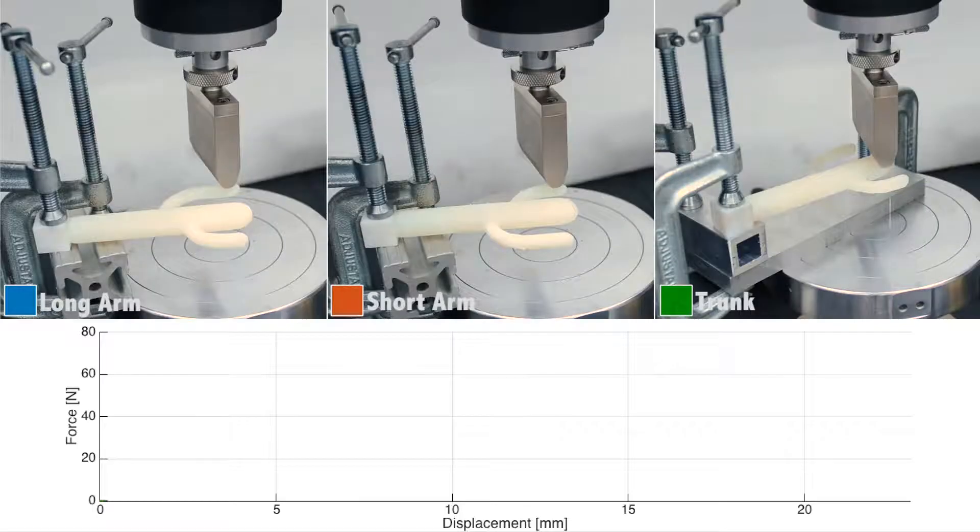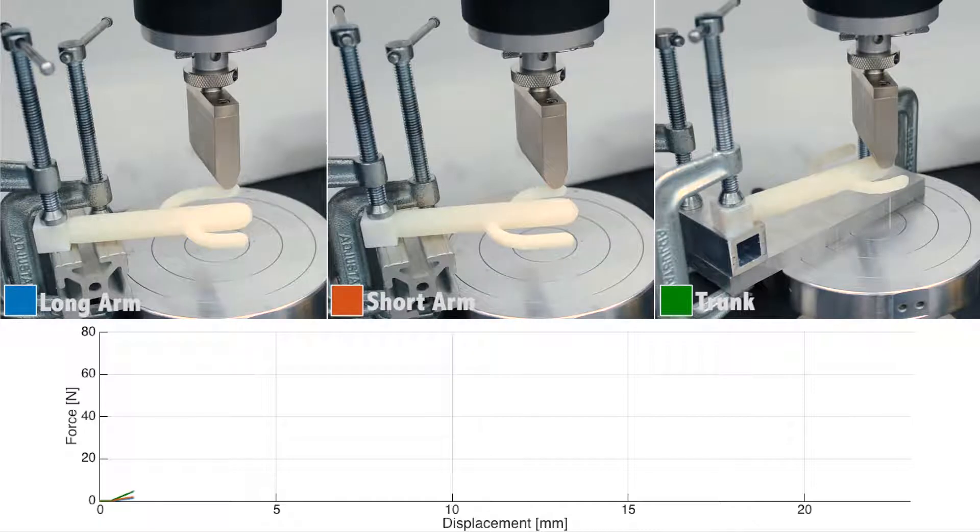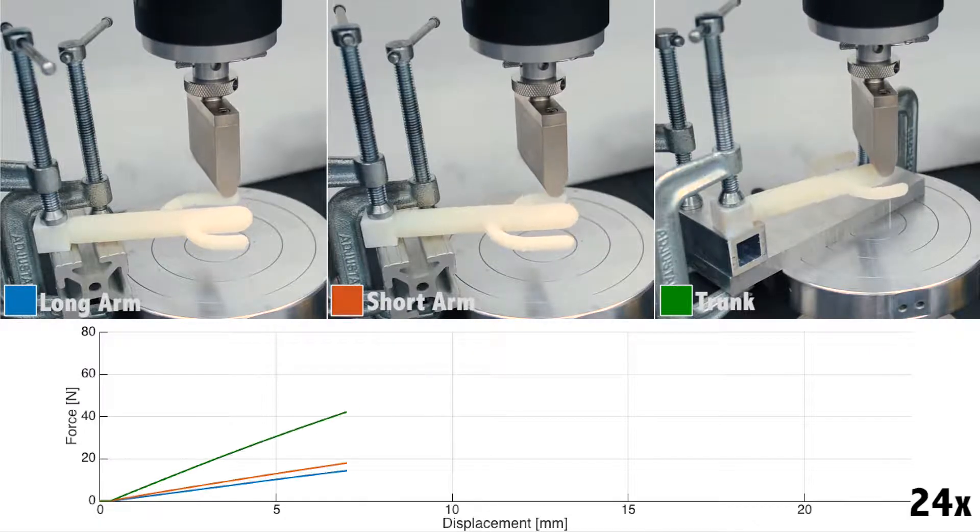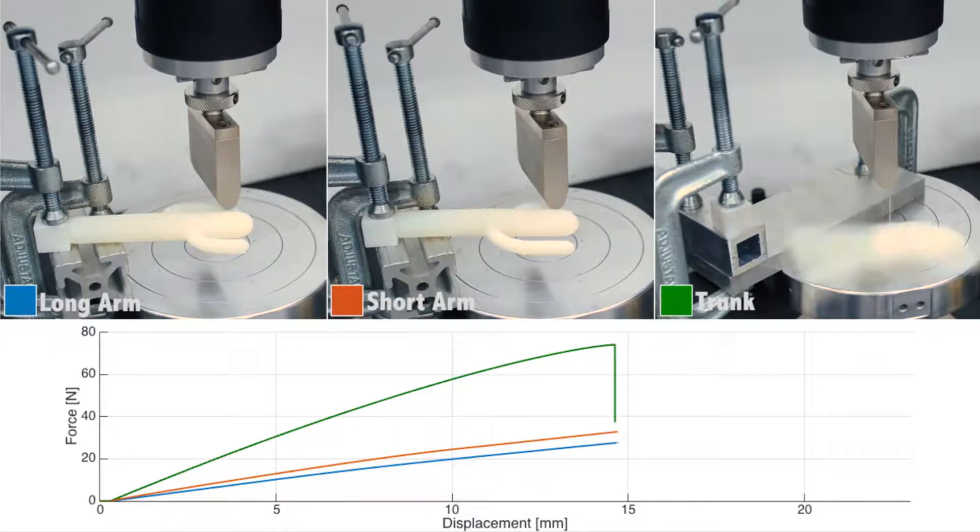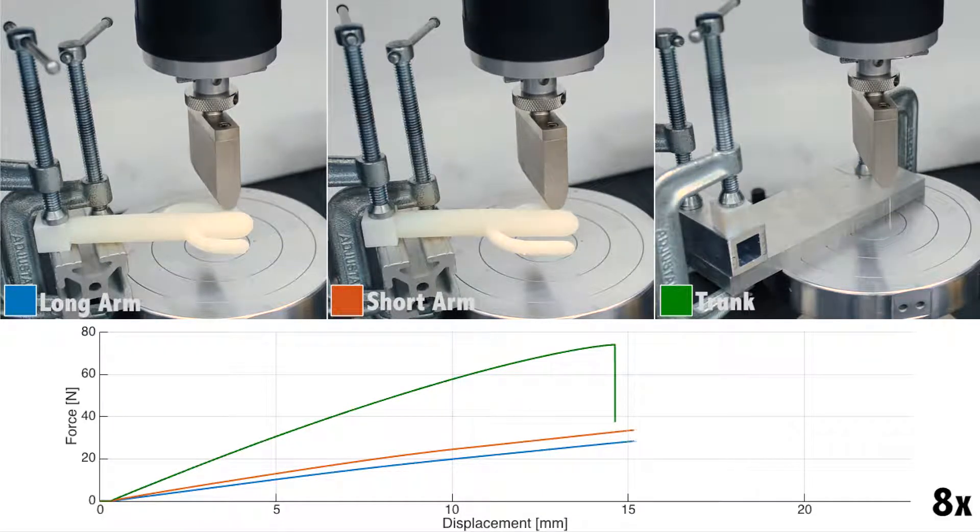We also compared the performance of three critical regions of the optimized model: two arms and the trunk. Test results agree with our analysis that the long arm is most critical, and there is no need to add material to either the short arm or the trunk.